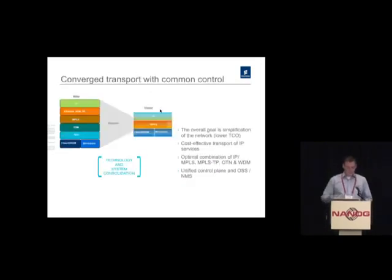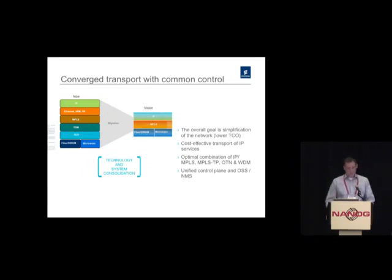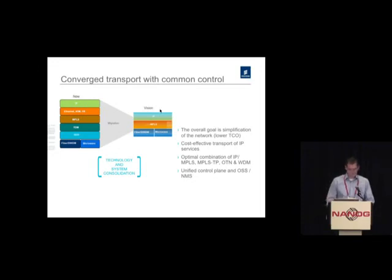So essentially what's happening is a collapsing of layers, and this is a slow process. What we see is there's an IP services layer which has to be there to deliver all the services that we're used to getting. But MPLS, which started off essentially in the IP core, is moving further and further into the metro network, into the aggregation and even towards the access. So MPLS, in some cases, can serve a packet multiplexing or packet transport function that spans from the core all the way potentially to the access — and that's what we can think of as a packet multiplexing or packet transport layer.